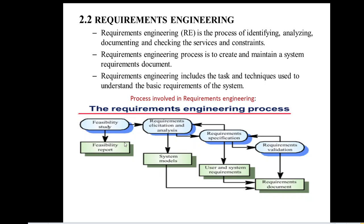We follow four steps: first is feasibility study, second is requirement elicitation and analysis, third is requirement specification, and fourth is requirement validation. In the feasibility study, we assess whether the system is useful for the business. We collect user needs and check whether they are useful for the business or not, and create a feasibility report. In requirement elicitation and analysis, we discover the requirements of users and systems.